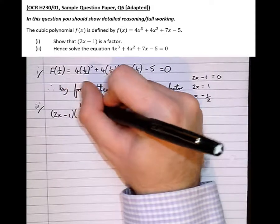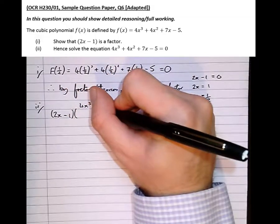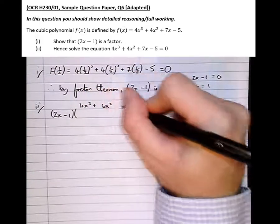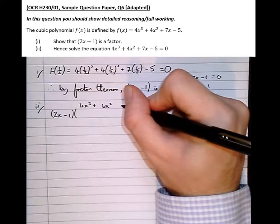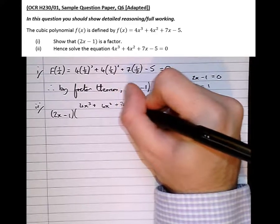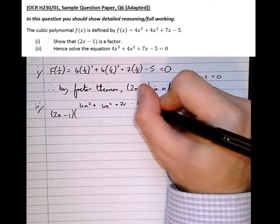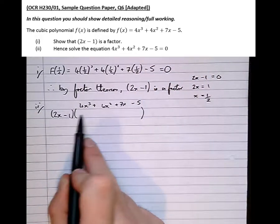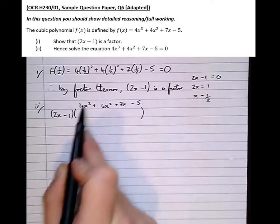And what we're going to have to do is try and find out the other factor using polynomial division. So there's a way of speeding polynomial division up. I'm just going to write out what I'm trying to multiply it to above. So I'm trying to multiply it to get 4x cubed plus 4x squared plus 7x minus 5. I'm multiplying 2x minus 1 by whatever I'm going to put in this bracket to get that answer there.